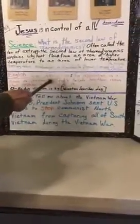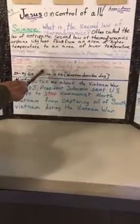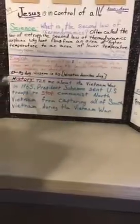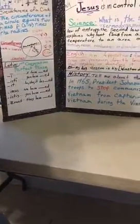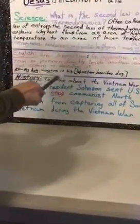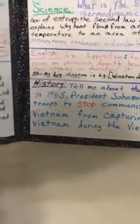Let's look at English. An appositive is a noun or pronoun directly beside another noun that explains or identifies it. An example: 'My dog Winston is big.' I could say 'my dog is big,' but the appositive 'Winston' describes and identifies the dog — that's his name. So 'my dog Winston is big' — Winston is the appositive.